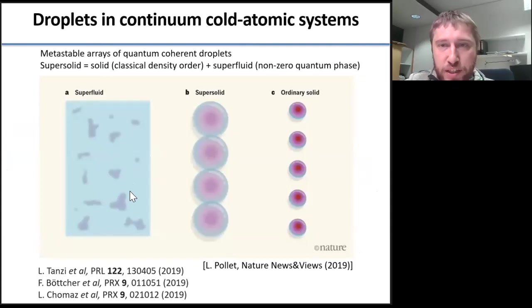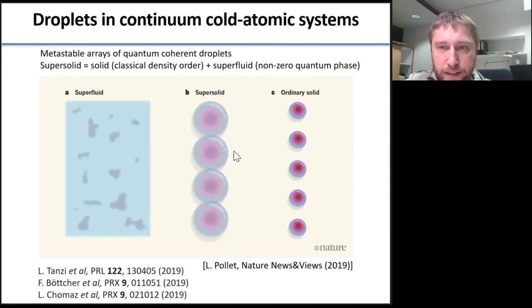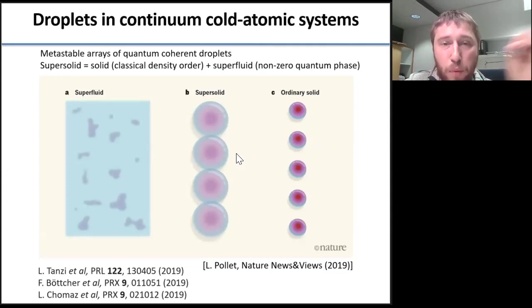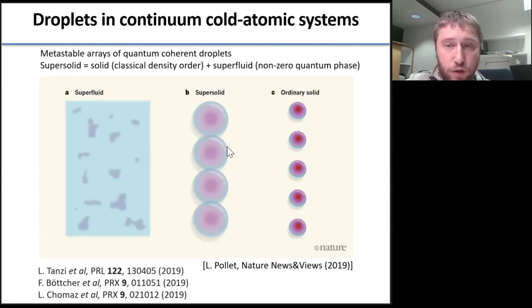On the left you see an ordinary superfluid phase with some density fluctuations. Here on the right, you see a crystal state of non-coherent droplets. And the state in the middle is the most interesting one: you still have an array of droplets, but now with both density-density correlations and quantum coherence between droplets. This array represents the so-called supersolid state of matter.